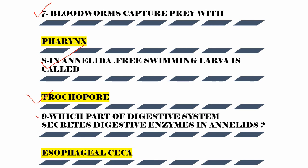The ninth question is: which part of the digestive system secretes digestive enzymes in Annelids? The answer is the esophageal glands — the esophageal glands secrete digestive enzymes in Annelids.